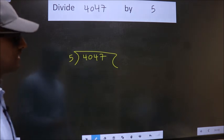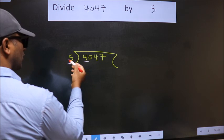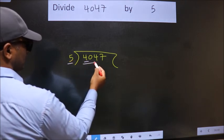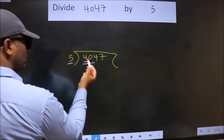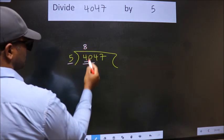Next, here we have 4, here 5. 4 is smaller than 5, so we should take two numbers, 40. When do we get 40 in the 5 table? 5 eights, 40.